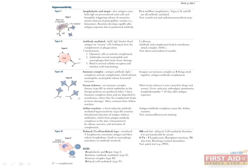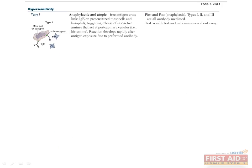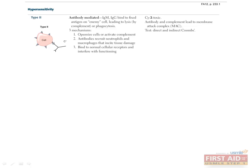Hypersensitivity reactions are potentially the highest yield concept for the boards in this chapter. There are four types: types 1, 2, and 3 are antibody mediated, while type 4 is cell mediated. Type 1 hypersensitivity reactions occur when free antigen cross-links IgE on pre-sensitized mast cells and basophils, triggering release of histamine, bradykinin, and other vasoactive amines. Anaphylaxis and atopy are classic examples. Type 2 hypersensitivity is antibody mediated by IgM and IgG; when either binds fixed antigen on a foreign cell, this triggers lysis or phagocytosis of that cell.